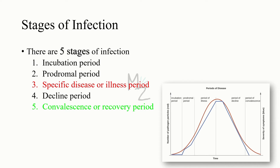There are five main stages of infection: incubation period, prodromal period, specific disease or illness period, decline period, and convalescence or recovery period. In some places, you will find that there are only four stages of infection listed — they exclude the decline period, because it is sometimes included within the convalescence or recovery period. We'll talk about the difference between them later.